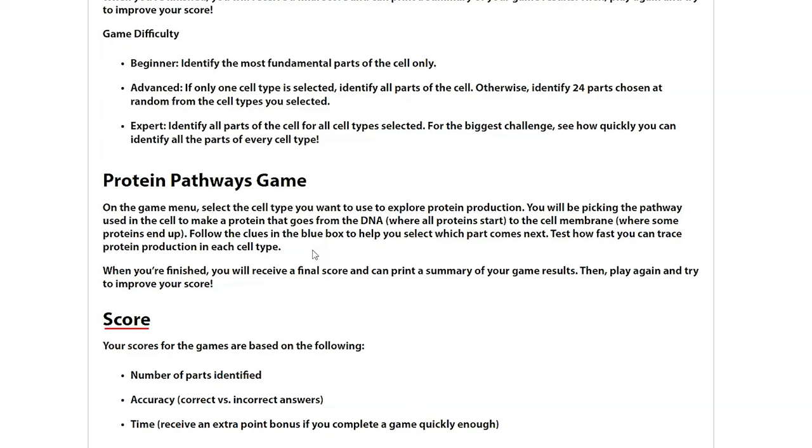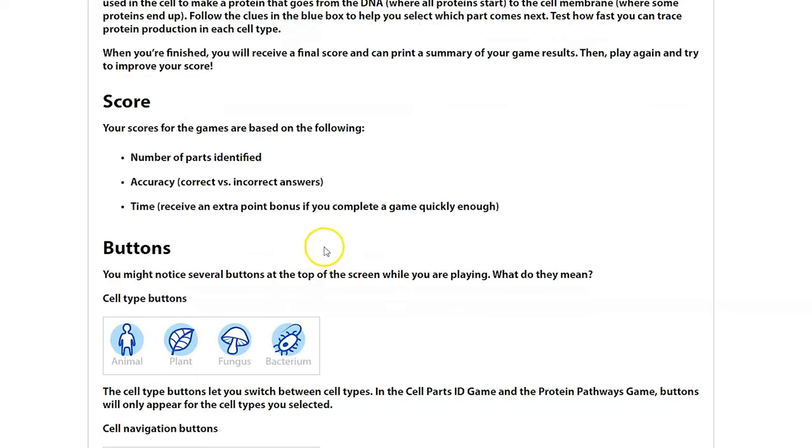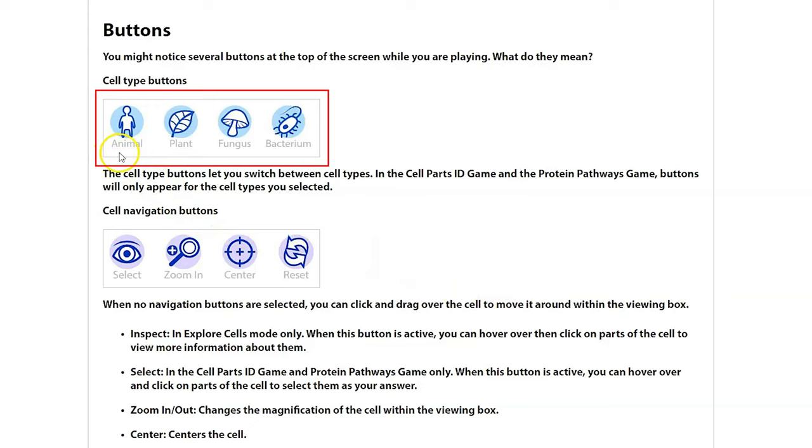Now, the buttons here. I want to point out that you can have more than one cell type selected, and that makes it more complex. So we have animal cells, we have plant cells, we have fungus or fungi, which by the way are not plant cells, they're not animal cells. And then we have bacteria. So you can learn all the parts of all these cells. There's some crossover between the cells, but there are some parts that are unique to some of the cells.